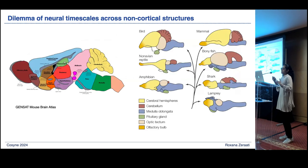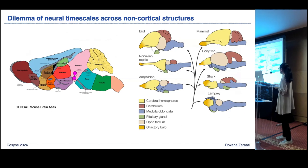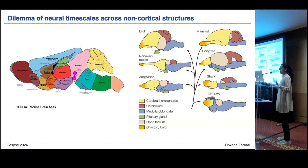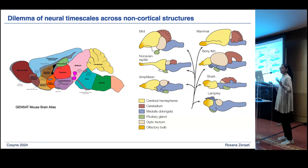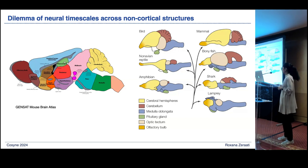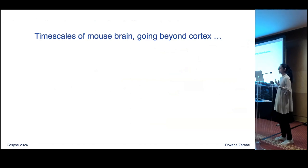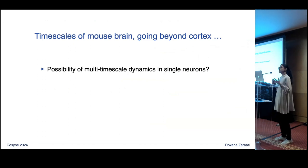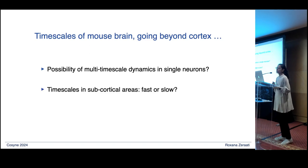So there is a dichotomy. From a hierarchical structure of timescales, one would expect very fast timescales in subcortical structures. But if we look throughout the course of evolution, subcortical structures like midbrain, hindbrain, and cerebellum persist across many animals and can perform very complex computations. One might think that if neurons in these areas need to perform relevant computations and behaviors, they might need slow timescales. To answer this, we will measure timescales across the mouse brain well beyond the cortex, addressing two questions: do single neurons have multiple timescales, and do subcortical structures have faster or slower timescales?